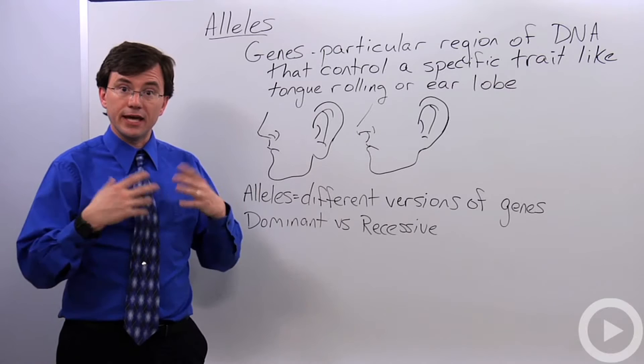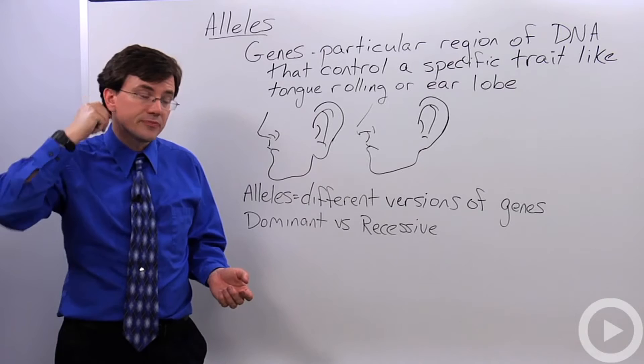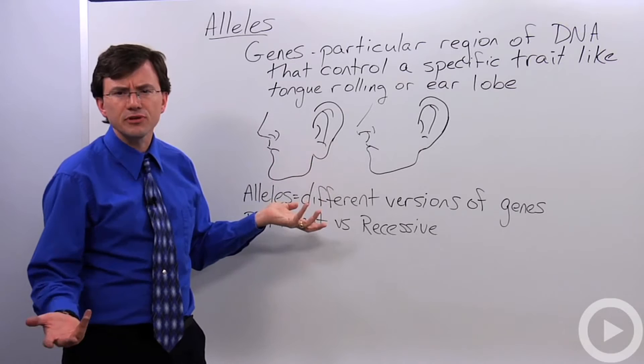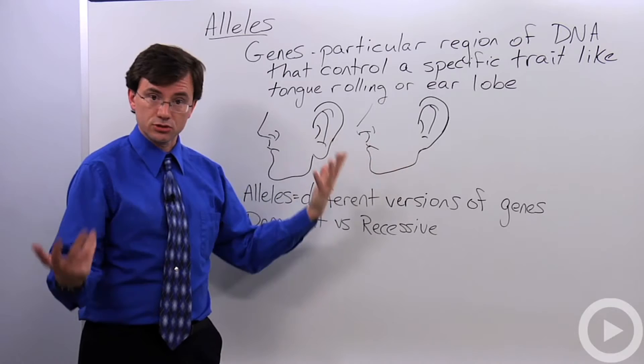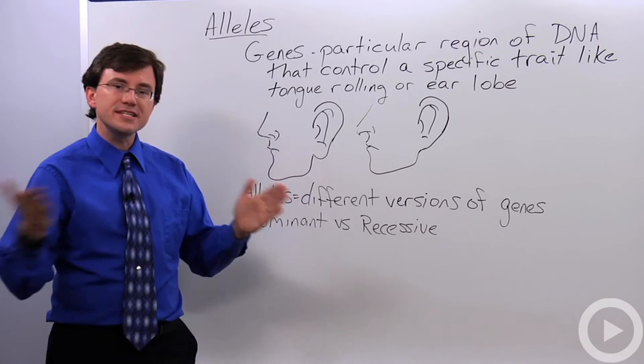Another example of a gene is a gene guiding the makeup of your earlobe. Some people have a version of that gene that gives what's called a detached or sometimes free earlobe shape. Other people have a version of that same gene that controls the earlobe shape that creates this attached earlobe shape.